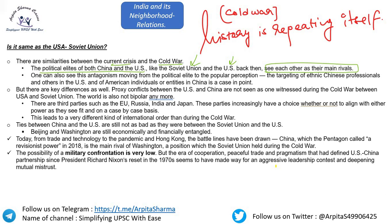However, there are key differences. Third parties like the EU, Russia, India, and Japan now have a choice whether or not to align with either power on a case-by-case basis. This leads to a very different kind of international order than during the Cold War. Also, ties between China and the US are still not as bad as they were between the Soviet Union and USA.